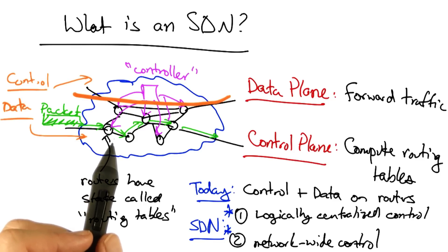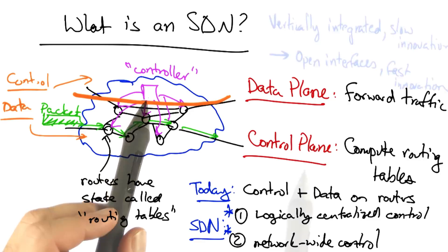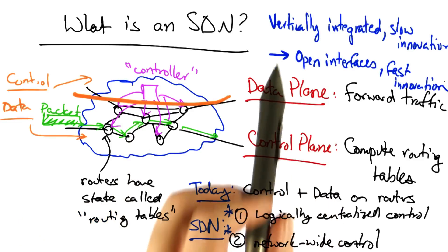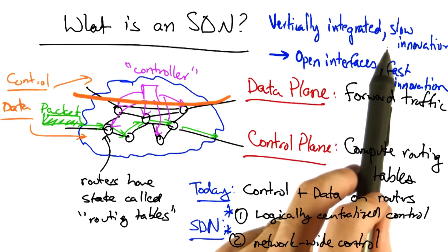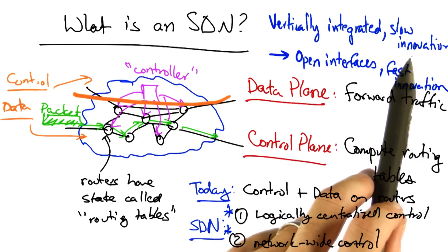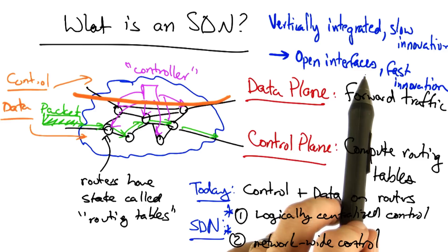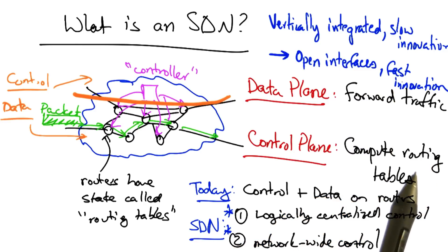The separation of data and control allows a network operator to build a network with commodity devices where the control resides in a separate control program. This refactoring allows us to move from a network where devices are vertically integrated, making it very tough to innovate, to a network where the devices have open interfaces that can be controlled by software, thus allowing for much more rapid innovation.